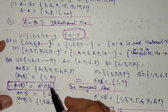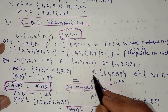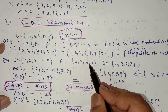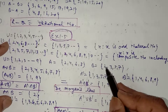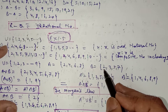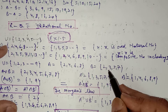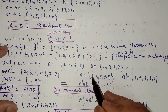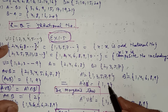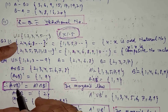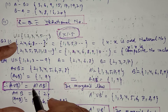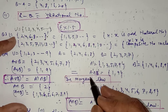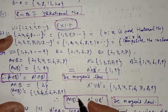Now find A'∩B'. A' — those elements not in A but in the universal set — is {1, 3, 5, 7, 9}. B' — those not in B but in the universal set — is {1, 4, 6, 8, 9}. The intersection of these two sets gives the common elements: 1 and 9. So they are equal to each other, and we can say that (A∪B)' = A'∩B', which is De Morgan's law.